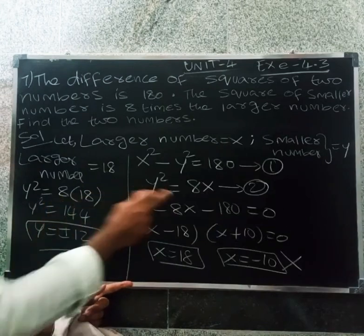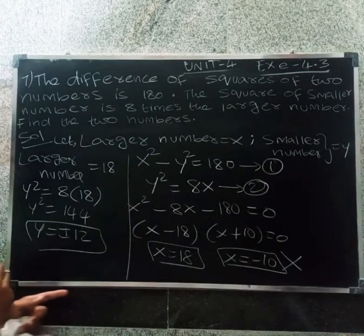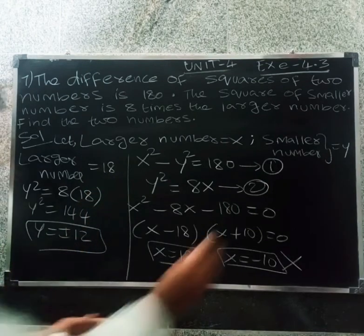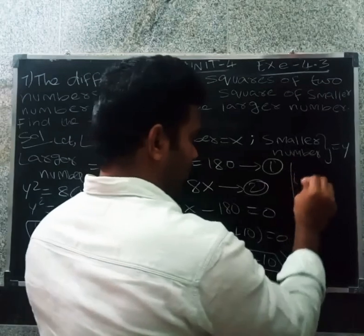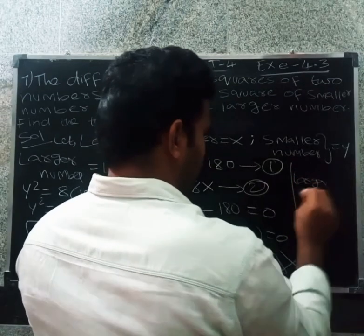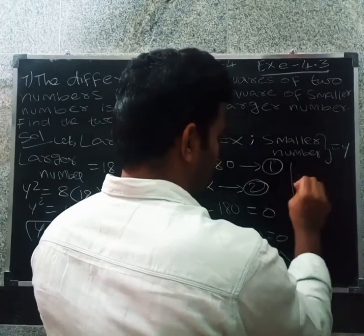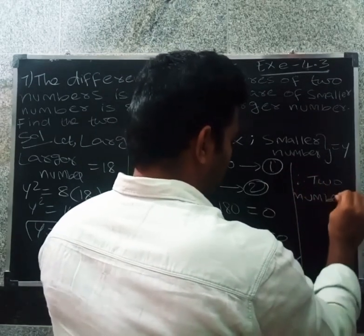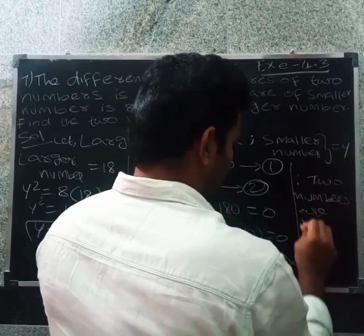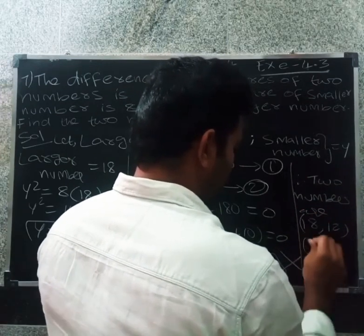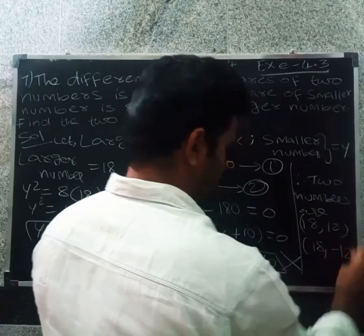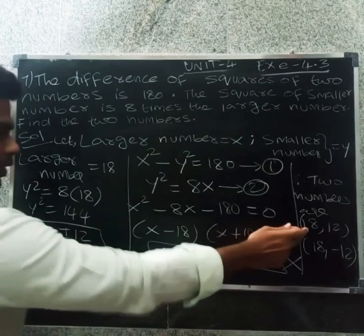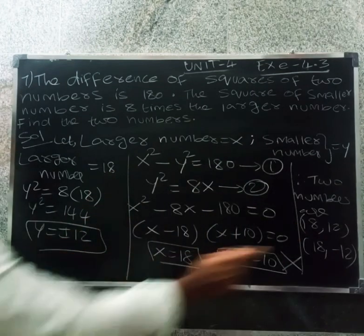So y squared equals 144, giving y equals 12. The two numbers are 18 and 12. Thank you.